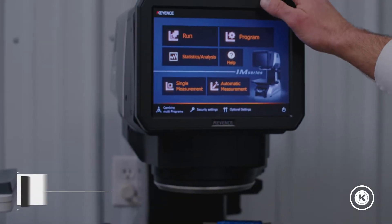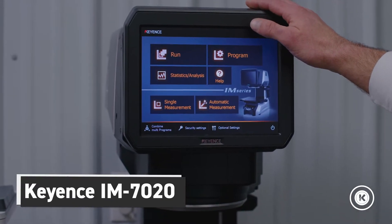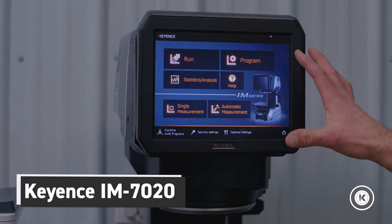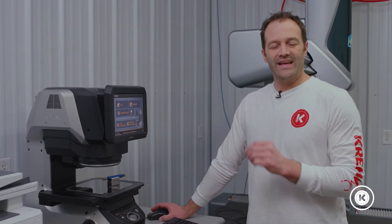What we have here is a Keyance IM7020. It's a vision system with all the bells and whistles. To check your pitch diameter, it is very simple and very quick to use this piece of equipment.